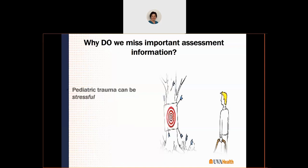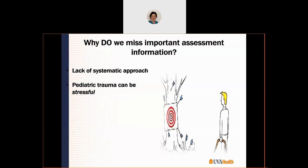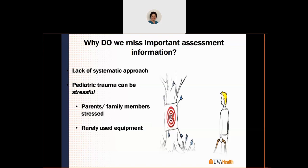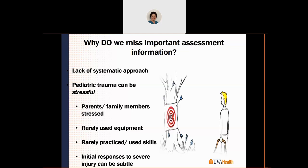Why do we sometimes miss important assessment information? Pediatric trauma can be very stressful. Without a systematic approach, it's easy to get off track when family members are screaming and asking you to save their child. We may have equipment we rarely use and skills we haven't practiced enough to intervene when needed. That systematic approach must be ingrained in our brain to stay on track in stressful situations — and we must recognize that pediatric patients can have very subtle initial responses to severe injury.